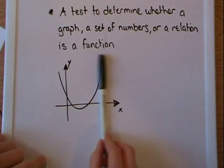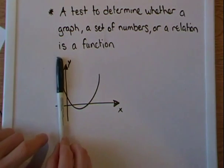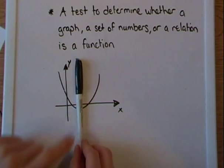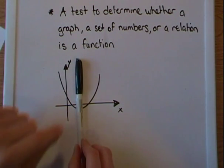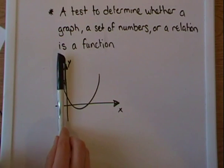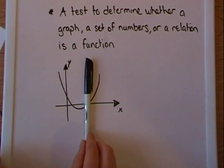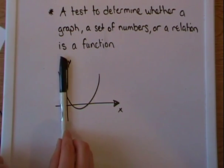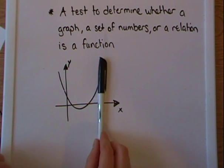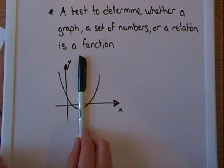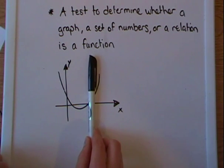Holding it vertically. And if this pen touches the graph on two places, or two points at the same time, it is not going to be a function. So it can only touch each and every point on this graph once. As you can see, if I move this pen from left to right, it only touches the graph on one point each time I move it.